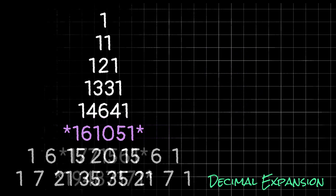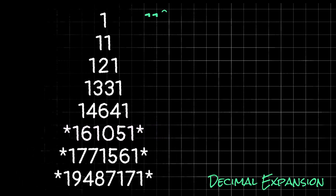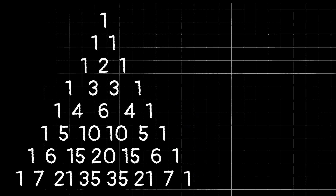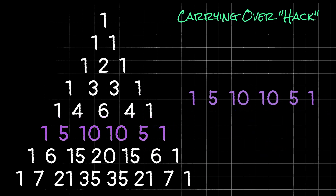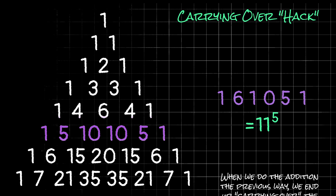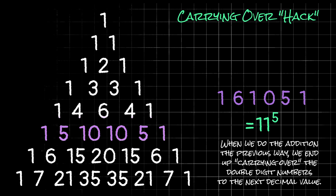It turns out all of these numbers are powers of 11: 11 to the zero power, then 11 to the first, 11 squared, 11 cubed, 11 to the fourth, and so on. Math is pretty cool, and I'm just getting started. Also, really quick before I move on — you can kind of think of this as carrying the digits over. So we'd start with a one, take five plus one to get six, zero plus one to get one, and then zero, five, and one. But I don't like to give hacks or shortcuts first without actually explaining why they work and where they come from.